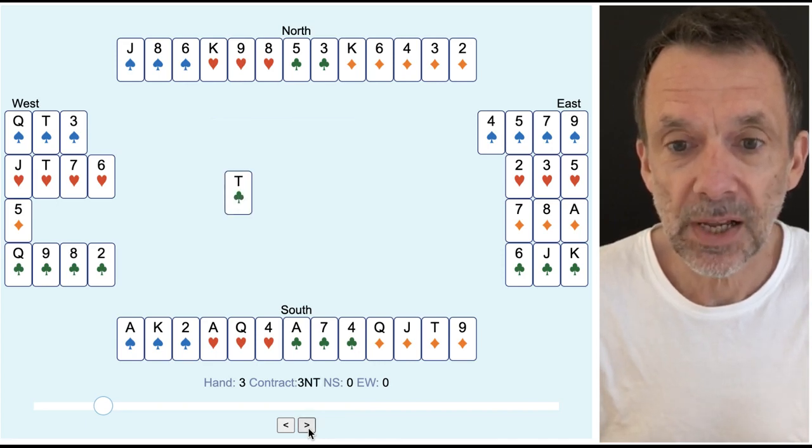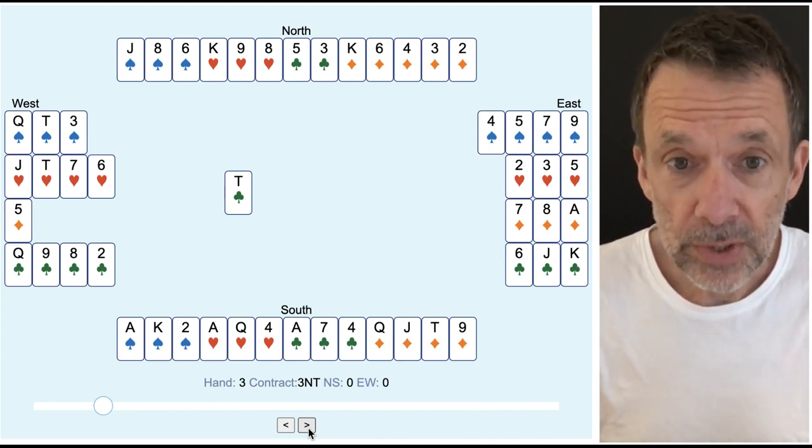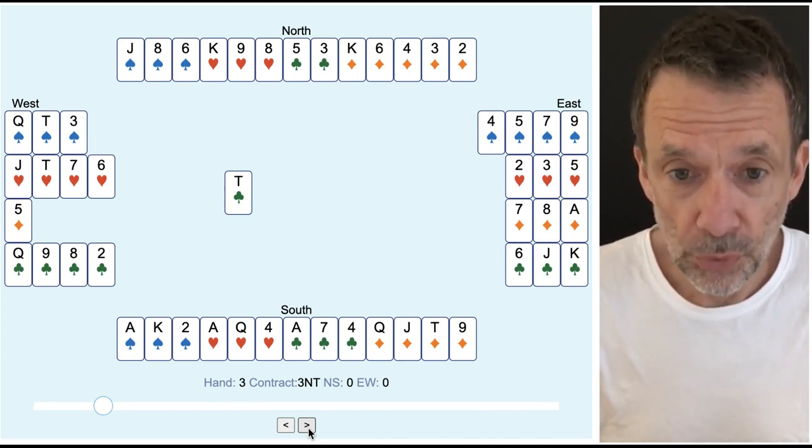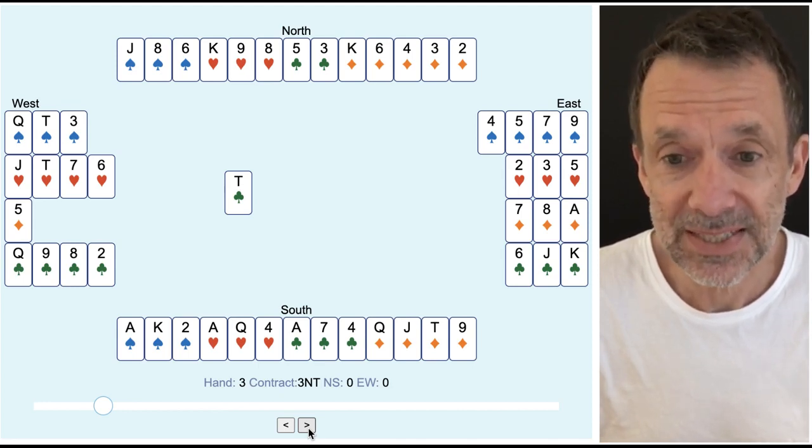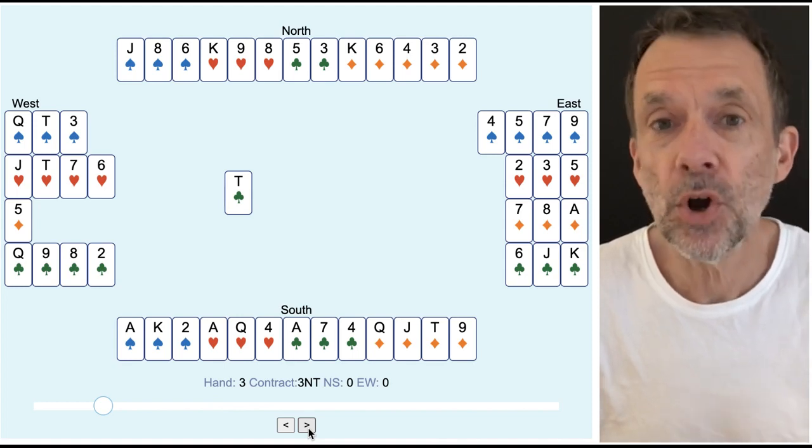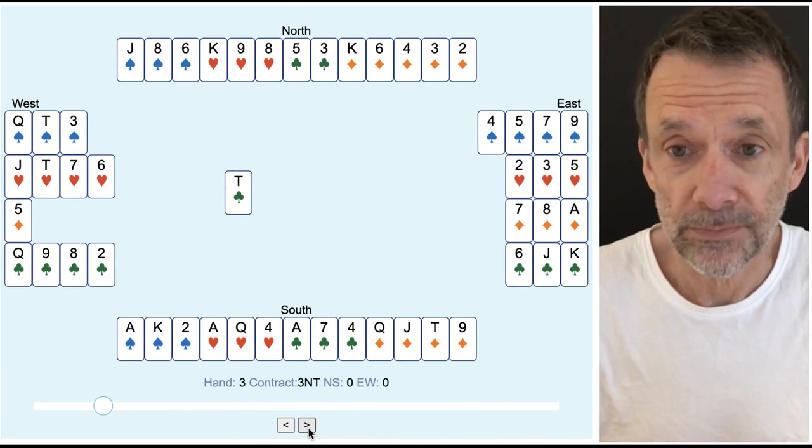West leads the ten of clubs. Now in three no trumps this is looking pretty good because north-south we have two spade tricks, three heart tricks, so that's five. We've got the ace of clubs as six and once we knock out the ace of diamonds we're going to be able to take four diamond tricks.